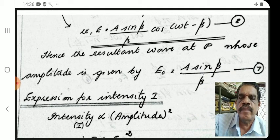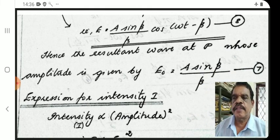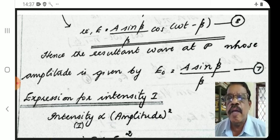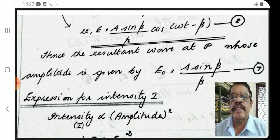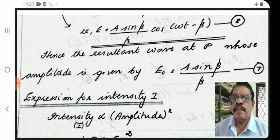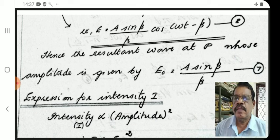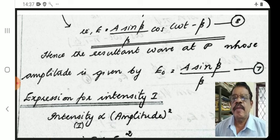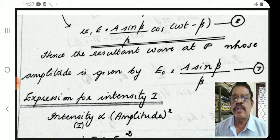This slide is a repetition of what we saw in the last class. In the last class we derived the equation E = A·sinβ/β · cos(ωt − β), which is the resultant wave equation. When all the wavelets from a₁, a₂, etc. of the slit fall on the screen at point P, the resultant amplitude is given by E₀ = A·sinβ/β.